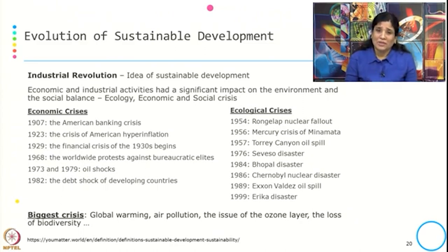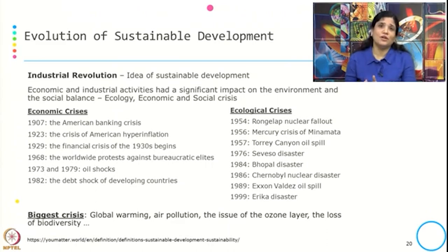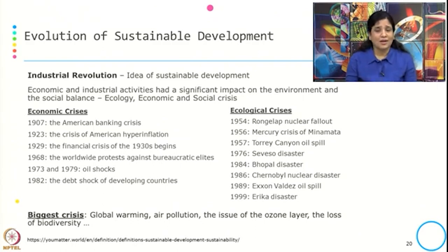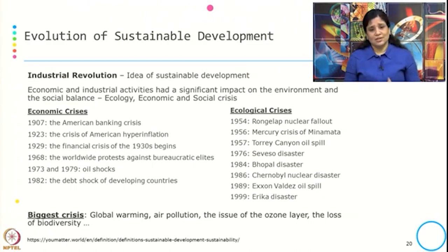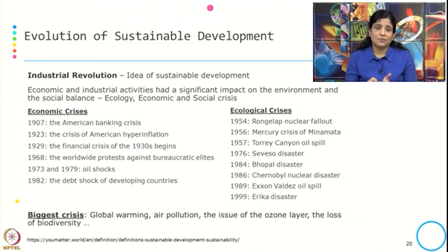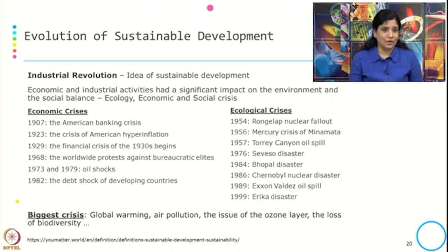The biggest crises that came after the industrial revolution over the years — what we are encountering now — include global warming, air pollution, ozone layer depletion, loss of biodiversity, glacier melting, and so on. The evolution of sustainable development is drawn from a blog that gives the definition of sustainable development, sustainability, and nicely presents how sustainable development has evolved over a period of time.